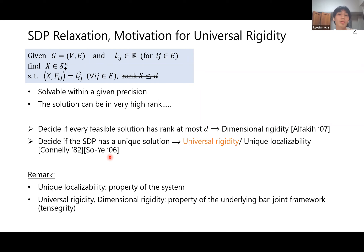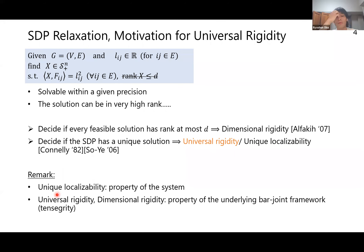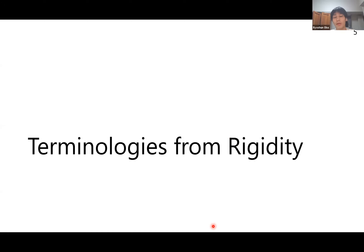There are two natural ideas. First, decide if every feasible solution of the relaxed SDP has rank at most D — this leads to the notion called dimensional rigidity. Second, decide if the SDP has a unique solution — this corresponds to universal rigidity and unique localizability. Localizability refers to a property of the system, while rigidity refers to the property of the underlying framework or tensegrity.